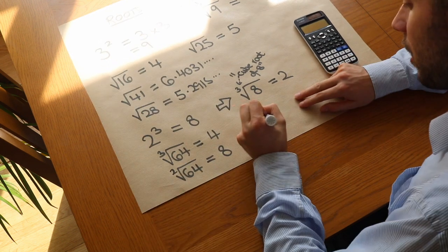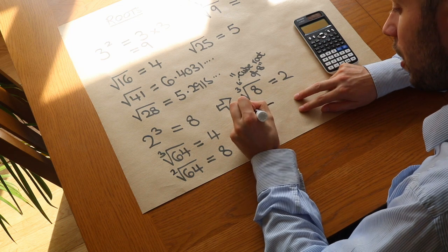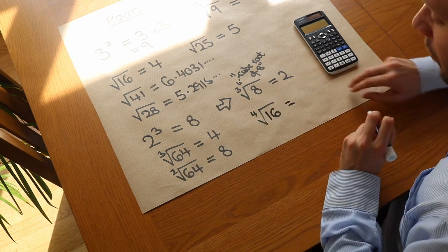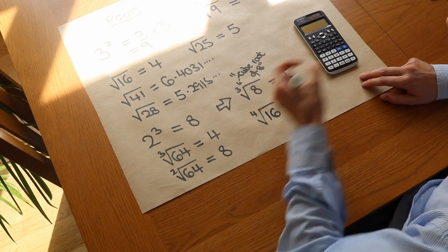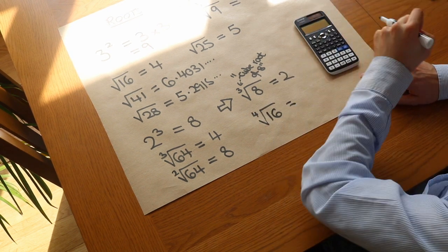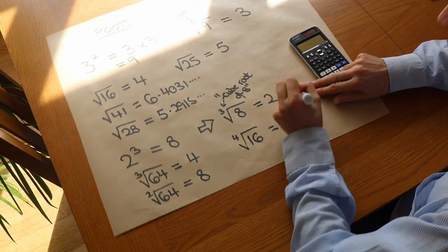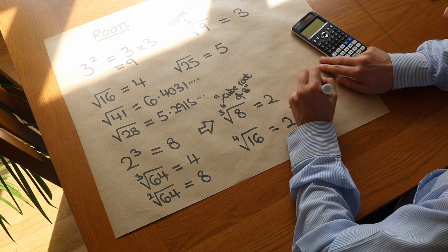You can have other roots as well. I could have, for example, the fourth root of 16. That means what number to the power of 4, so what number times itself, times itself, times itself, gives you 16? Well it's 2, because 2 to the power of 4 equals 16.